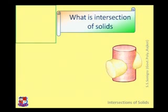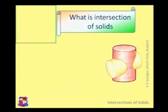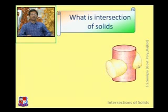Now, what is intersection of solids? Here one figure is drawn which shows the intersection of two cylinders — one is a vertical cylinder that is red colored, and another is a horizontal cylinder that is yellow in color. One cylinder is cutting the another cylinder; it passes through some other solid. So here some curve of intersection would be there — this is the curve of intersection when two solids meet each other.